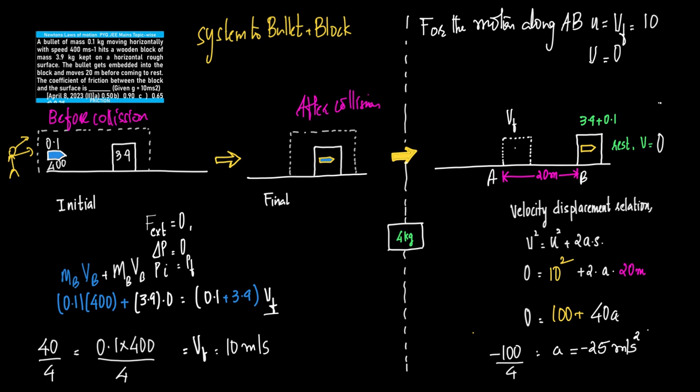Wait, let me correct that. The displacement is 0.20 m, so 0 = 10² + 2 × a × 0.20, which gives 0 = 100 + 0.4a, so a = −100 / 40 = −2.5 m/s². The retardation is 2.5 m/s², which corresponds to option D.